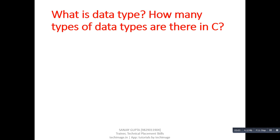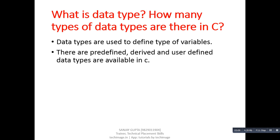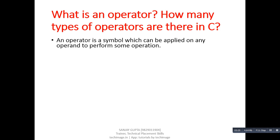Next question: what is a data type and how many types of data types are there in C? Data types are used to define the type of variables. There are predefined, derived, and user-defined data types available in C. Next question: what is an operator and how many types of operators are there in C? An operator is a symbol which can be applied on any operand to perform some operation, where an operand can be a constant or variable.